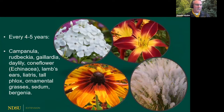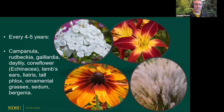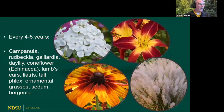The next group needs dividing every four to five years. This includes white-flowered tall garden phlox, daylilies — which bloom better if dug and divided — galliardias, coneflowers, and ornamental grasses. Ornamental grasses really should be dug every four to five years, taking a fresh clump from the outer perimeter and replanting it.